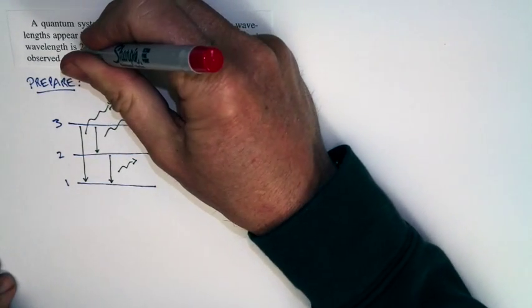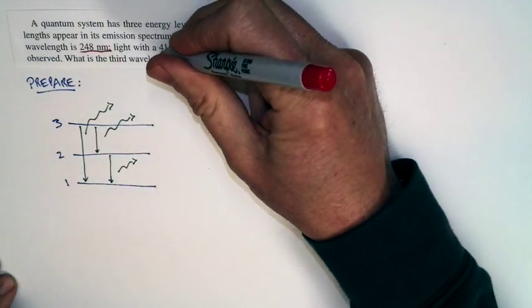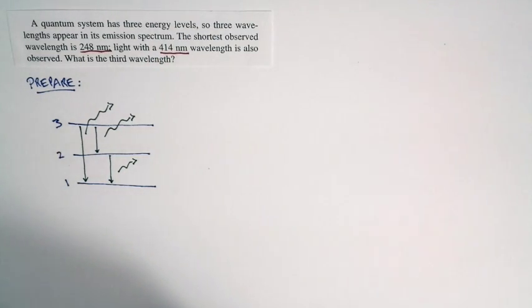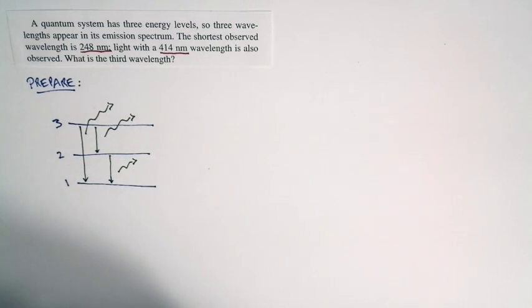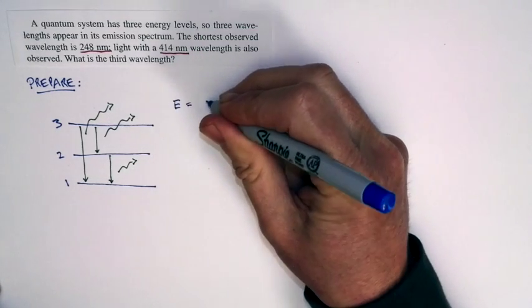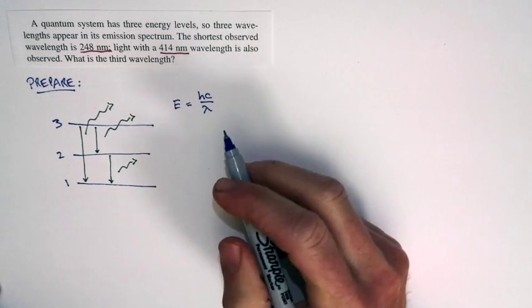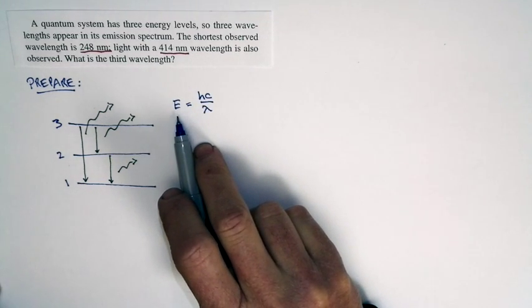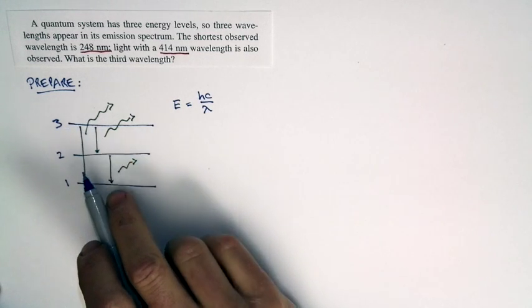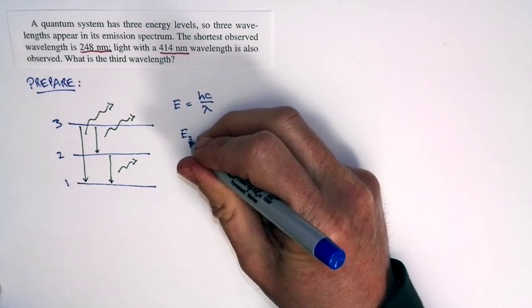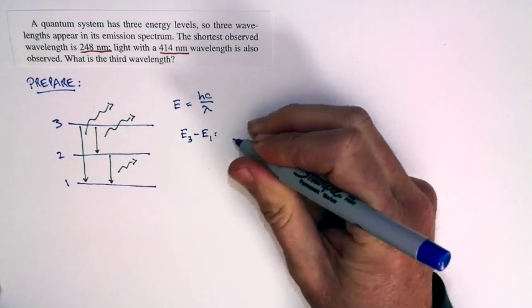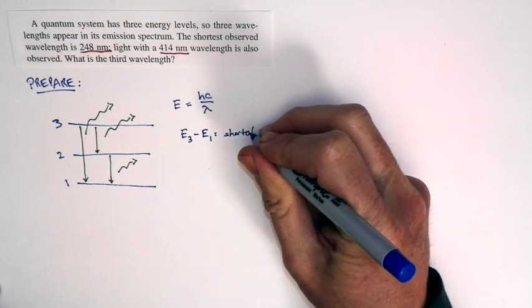We're told what two of the wavelengths are: one is 248 nanometers and one is 414 nanometers. We're also told the shortest observed wavelength is 248 nanometers. The shortest possible wavelength corresponds to the biggest possible energy, because the energy of a photon equals Planck's constant times C divided by the wavelength. So the biggest energy difference — E3 minus E1 — corresponds to the shortest possible wavelength.